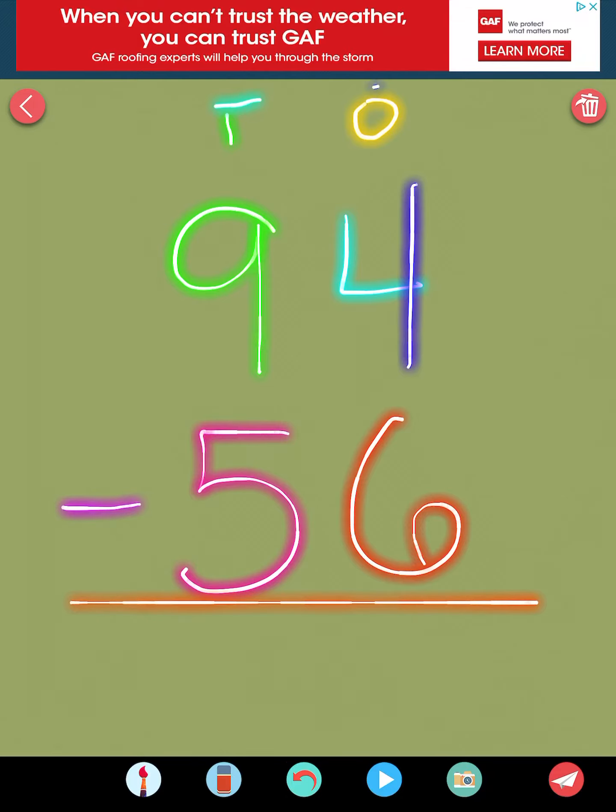So we start at the ones. 4 minus 6. You can't do that. You can't take away 6 from 4. So what are you going to do? Show me that you could borrow. So borrow one from the tens. Did you cross that out? Good. And now if I'm taking one away, I have only eight tens left. And where are you going to put that 10 that you borrowed?